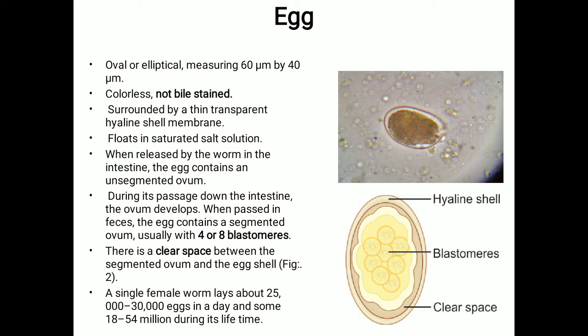When released by the worm in the intestine, the egg contains an unsegmented ovum. During its passage down the intestine, the ovum develops, and when passed in feces the egg contains a segmented ovum — usually with around four or eight blastomeres. There is a clear space between the segmented ovum and the egg shell. A single female worm can lay about 25,000 to 30,000 eggs per day, and 18 to 54 million during its lifetime.